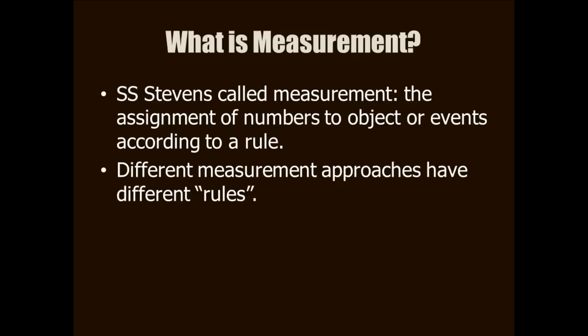At the risk of being pedantic, I'm going to start with the definition of measurement. Stevens called measurement assigning numbers to objects or events according to a rule. In the next few slides, I'm going to contrast two different strategies in measurement: classical measurement and item response theory. And what you're going to see is that these two methods have very different rules for assigning numbers.